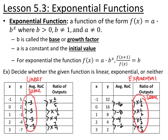For this first function, my average rate of change — every time I increase my x by 1, my y decreases by negative 3. For the ratio of outputs, to go from 5 to 2 I would multiply by 2 fifths; from 2 to negative 1, multiply by negative 1 half; from negative 1 to negative 4, multiply by 4; and from negative 4 to negative 7, multiply by 7 fourths. Because my average rate of change is always the same, this would be a linear function.